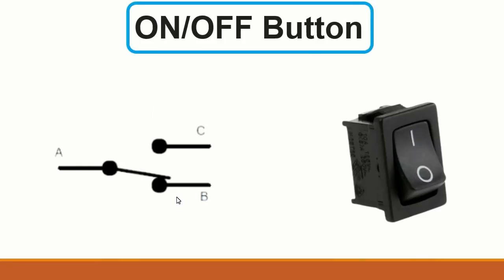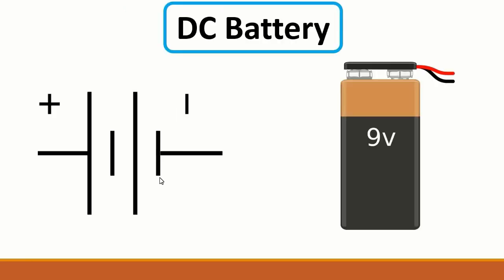Next we have the on/off button — simple and easy. It has a button with on and off states, and here is its schematic symbol. Then we also have the DC battery, shown here as 19V DC. The symbol shows plus and minus terminals — very straightforward.